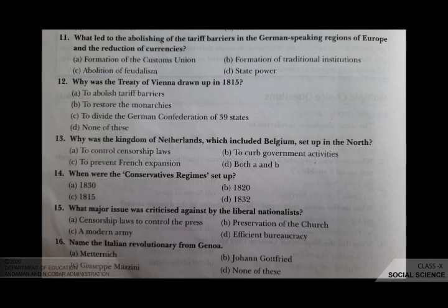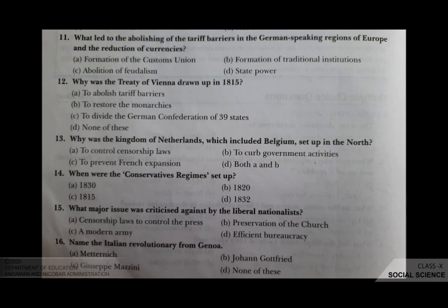When were the conservative regimes set up? Your options are A 1830, B 1820, C 1815, D 1832. The correct answer is C, 1815.